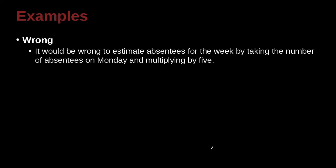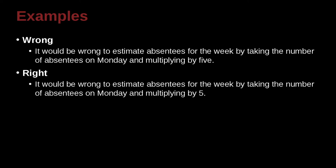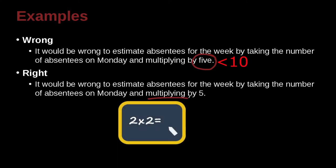It would be wrong to estimate absentees for the week by taking the number of absentees on Monday and multiplying by 5. Now we're getting into the numbers we just talked about. Remember that if you're writing less than 10, you should spell out the word. However, because we're talking about a formula — multiplying — in that case you have to write the number. In this case, 5 is correct.